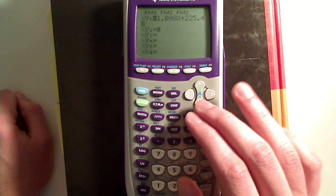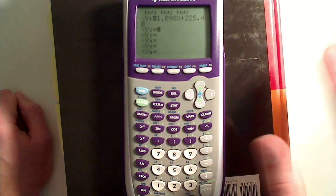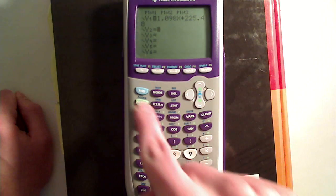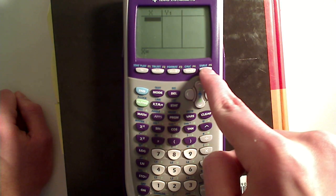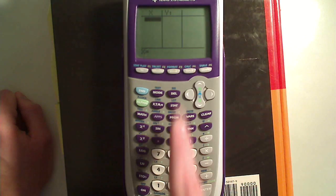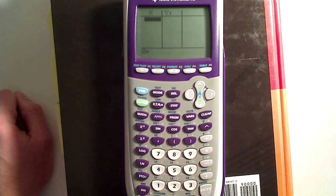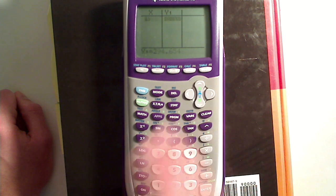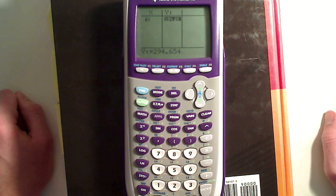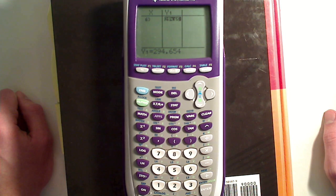So now that we have that, it's calculated and knows this equation. We can go to table, which is second graph. And here are the x and y columns. And if we type in 63, because we know it's at 63 degrees Celsius, there is our enthalpy, 294.65, which is what I should have gotten in the last video. Made a little bit of a typo.